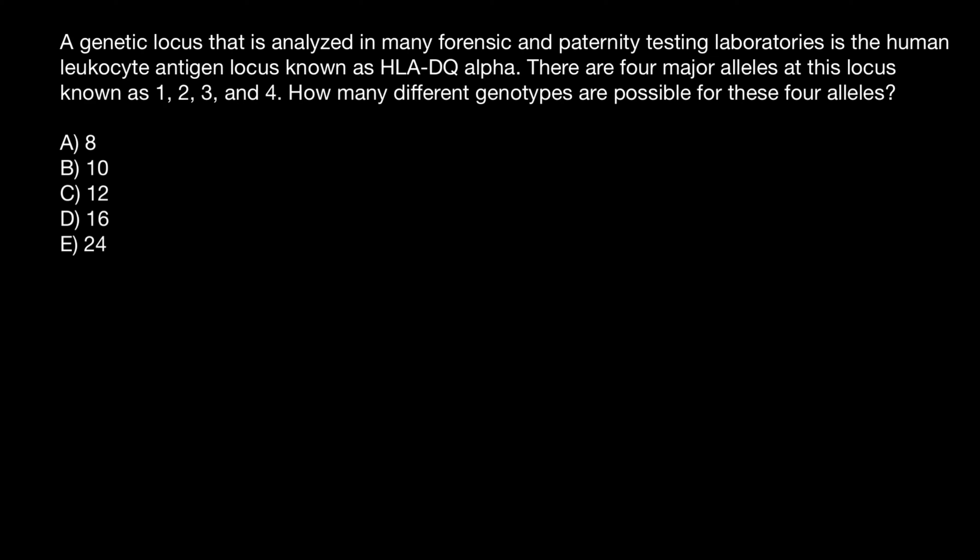Hello, and welcome to Nikolai's genetics lessons. Today's question is: a genetic locus that is analyzed in many forensic and paternity testing laboratories is the human leukocyte antigen locus known as HLA-DQ-alpha. There are four major alleles at this locus known as 1, 2, 3, and 4. How many different genotypes are possible for these four alleles?